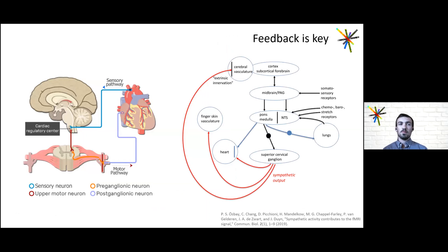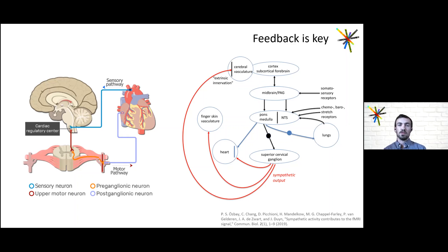The brain doesn't sit in a vacuum. We have feedback where activities that the brain does — talking to the heart and to the lungs as far as respiration and delivery of blood to tissue — can influence the measurements we take. We have all these connections of the autonomic nervous system and feedback from baroreceptors and chemoreceptors, and all of this feedback could definitely affect the signals we're measuring.